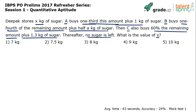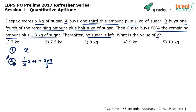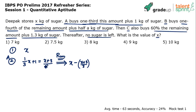This is a complex problem where many would get stuck. In step one, we have x kg. In step two, A comes in and buys one-third of x plus 1 kg, which is (x + 3)/3. So the remaining quantity is x minus (x + 3)/3, which simplifies to (2x − 3)/3.